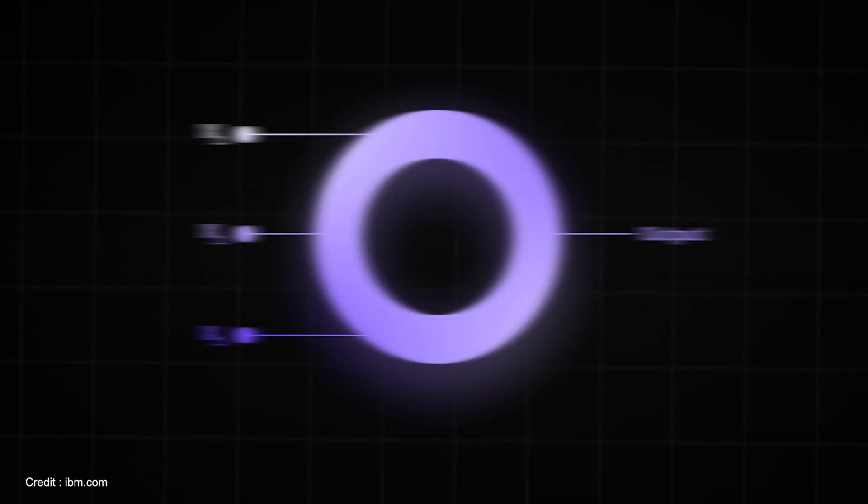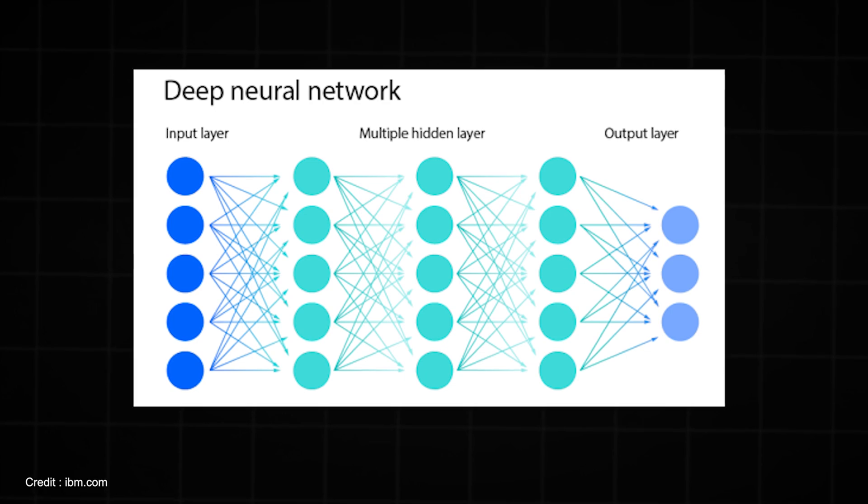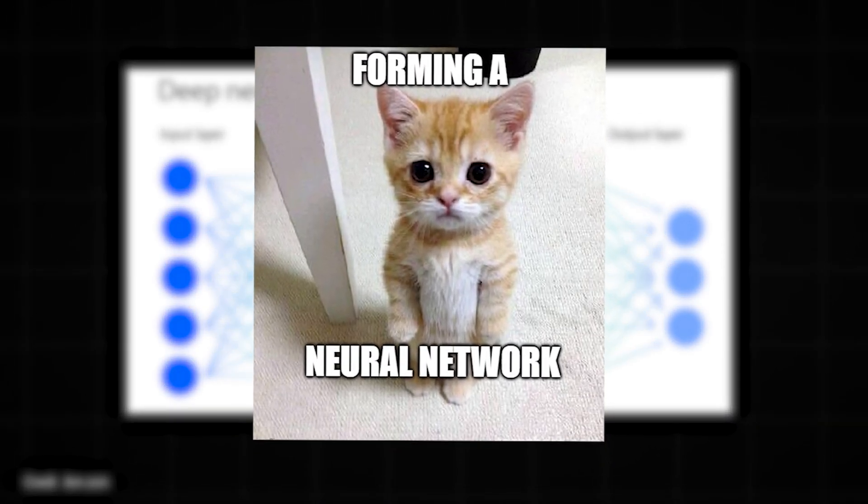Since a single neuron isn't sufficient on its own, there are multiple neurons in each layer, with the output of one layer becoming the input for the next, forming a neural network.